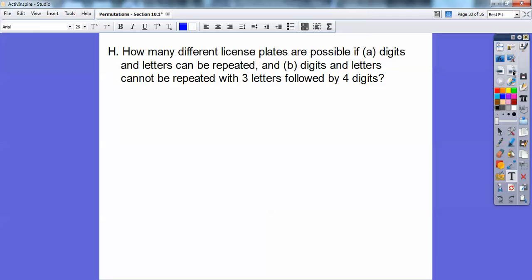How many different license plates are possible if (a) digits and letters can be repeated, and (b) digits and letters cannot be repeated, with 3 letters followed by 4 digits? So there's my 3 letters followed by 4 digits. I'm doing the letters in blue and the digits in red. Here, A says they can be repeated, so there's 26 letters in the alphabet, so 26 times 26 times 26. And there's 10 digits, 0 through 9 is 10 digits, so this would be 10, 10, 10, 10.